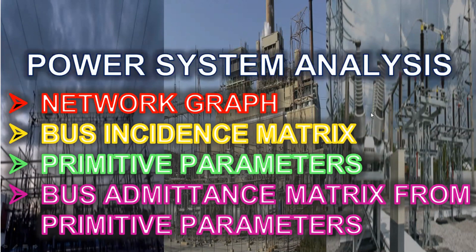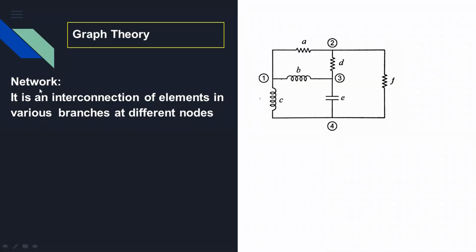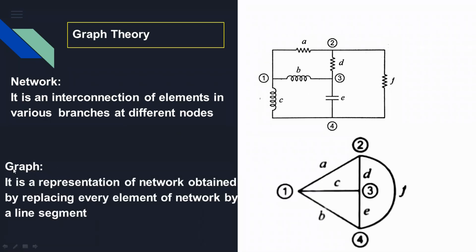In this video you are going to see: network, graph, bus incident matrix, primitive parameters, and bus admittance matrix from primitive parameters. First of all, what is meant by a network? The another name of network is circuit. It is an interconnection of elements in various branches at different nodes. This is an example network or circuit consisting of different elements — resistance, inductance, capacitance — and some circuits consist of voltage source, current source etc. The elements are marked as A, B, C, D, E, F etc.